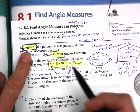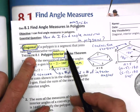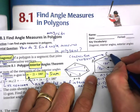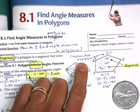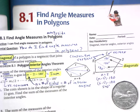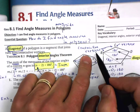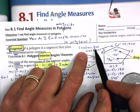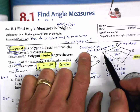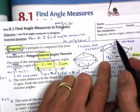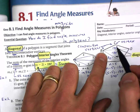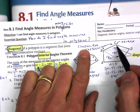A diagonal of a polygon is a segment that joins two non-consecutive vertices. Vertices are the corner points of a polygon — the plural of vertex is vertices. Consecutive vertices are ones that are beside each other. We use the word 'consecutive' rather than 'adjacent' because adjacent describes angles beside each other, while consecutive is a better term for describing these vertices.